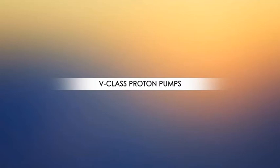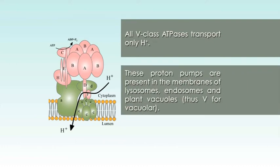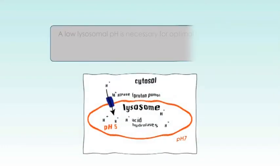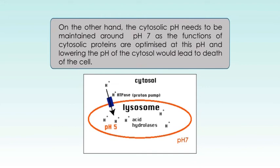Now let's study the V-class proton pumps. All V-class ATPases transport only hydrogen ions. These proton pumps are present in the membranes of lysosomes, endosomes, and plant vacuoles — and thus V for vacuolar. They function to acidify the lumen of these organelles. A low lysosomal pH is necessary for optimal function of the many proteases, nucleases, and other hydrolytic enzymes in the lumen of the organelle. On the other hand, the cytosolic pH needs to be maintained around pH 7, as the functions of cytosolic proteins are optimized at this pH, and lowering the pH of the cytosol would lead to death of the cell.